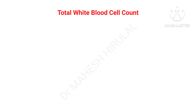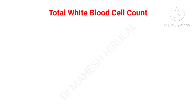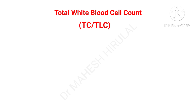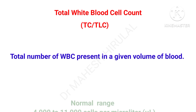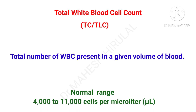Total white blood cell count, TC, also called total leukocyte count, is the total number of WBCs present in a given volume of blood. The normal range of total count is 4,000 to 11,000 cells per microliter.